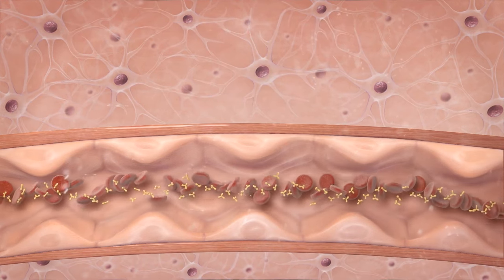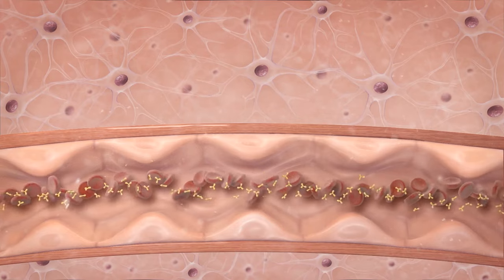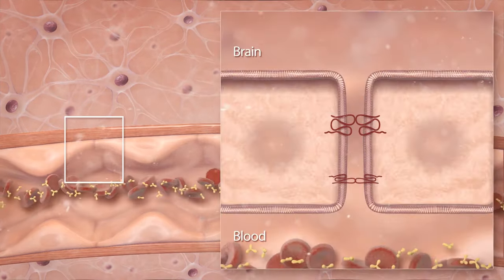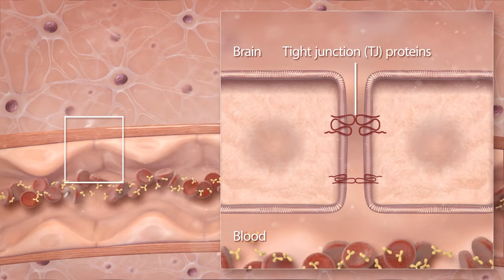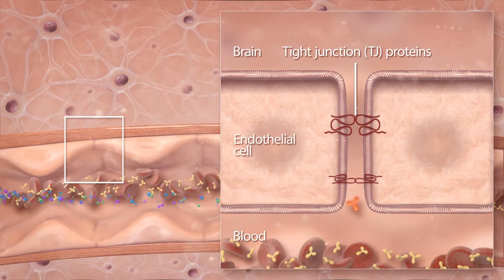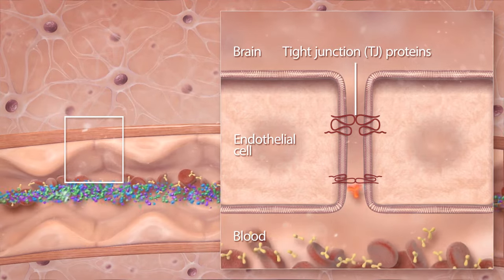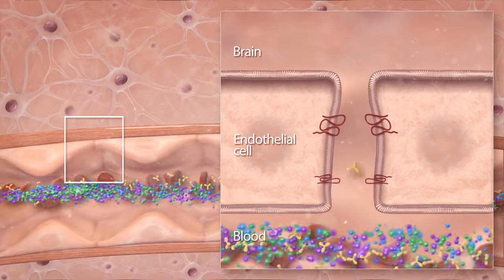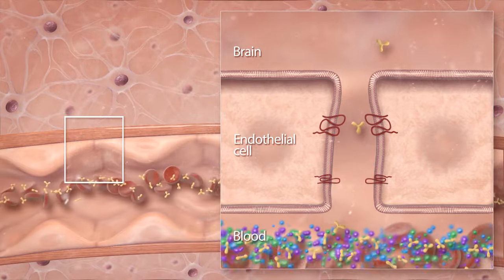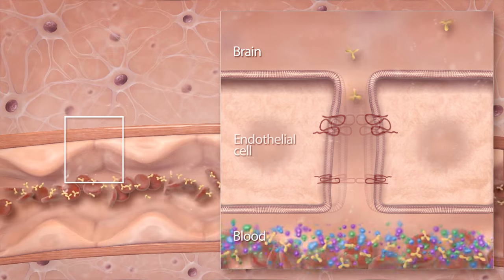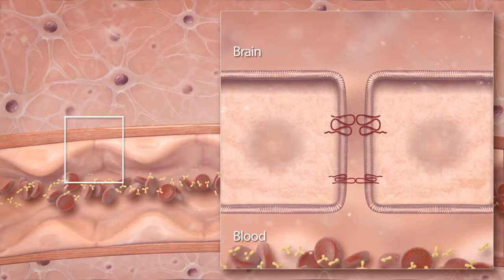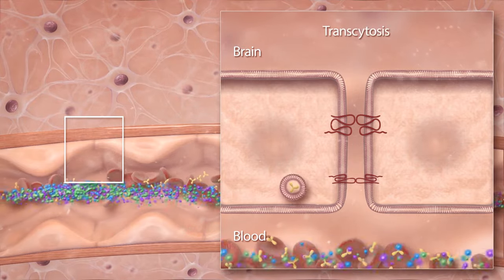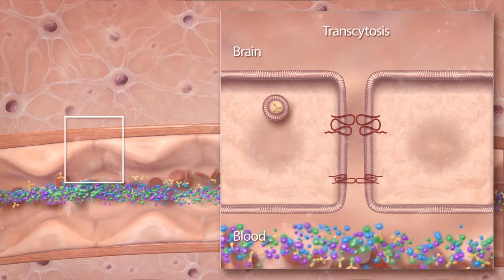These inflammatory cytokines cause the BBB to break down in two ways. First, they damage the tight junction, or TJ proteins, of the endothelial cells. TJ proteins join the endothelial cells of the BBB to one another and prevent the transport of molecules from the blood to the brain. The second way in which the cytokines break down the BBB is by increasing transcytosis — the transport of molecules within endothelial cells — and into the brain.